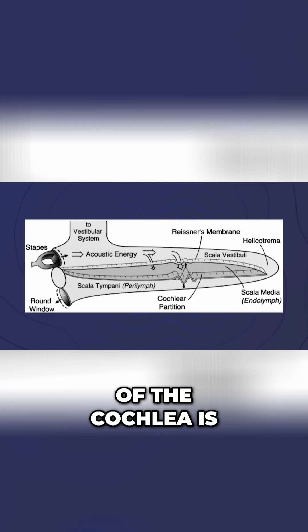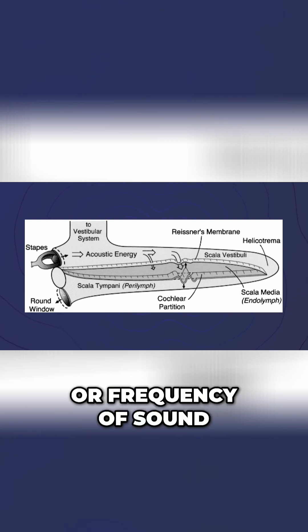The membrane inside of the cochlea is like a piano keyboard, with each area being responsible for a different pitch or frequency of sound.